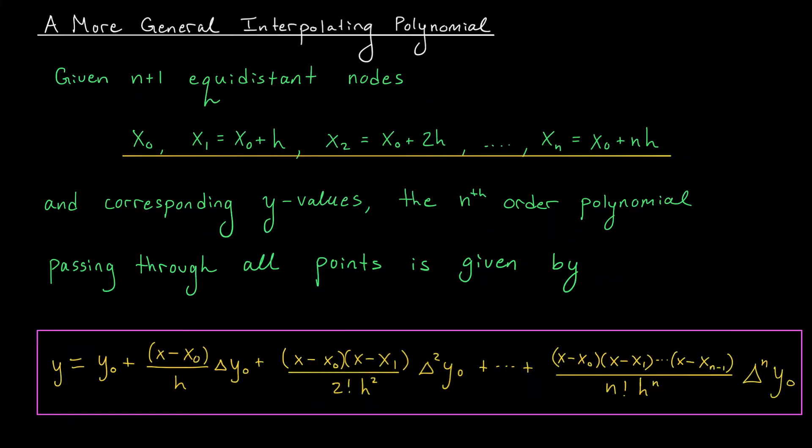Okay, here is the generalized version of the Newton interpolating polynomial. Now, don't get too scared by the formula you're about to see, because it is a little bit messy, but it's very similar to what we had before.